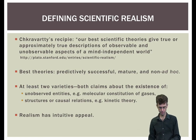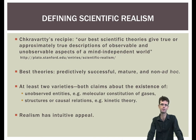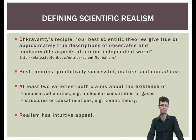First we should talk about how to define scientific realism. In his Stanford Encyclopedia of Philosophy article on scientific realism, Anjan Chakravarti offers this general recipe: our best scientific theories give true or approximately true descriptions of observable and unobservable aspects of a mind-independent world. Our best theories should be predictably successful — though that is not decisive — and it is often added that they are mature, have stood the test of time, and are non-ad hoc, i.e. not cooked up just to provide an explanation.